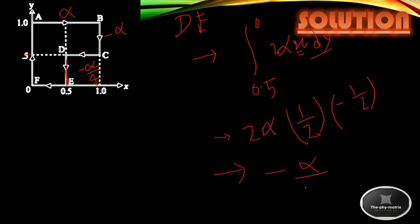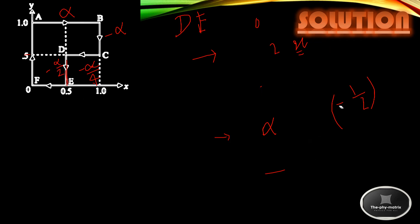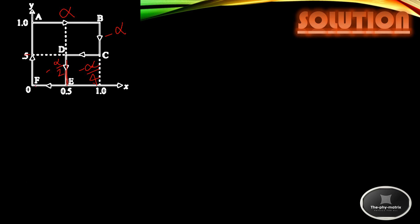The result for D to E is minus α/2. Now let us consider E to F. For E to F, dy equals zero, and the first integrand requires y — but y equals zero along this segment, so whatever the limit in dx, the integral is zero. Therefore the work done for E to F is zero.